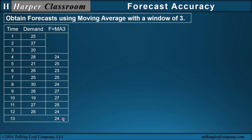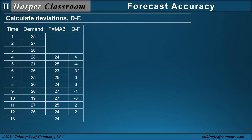Forecast accuracy addresses the question: how accurate or how good is that forecast? The approach is looking at past forecasts and how well they have forecasted past data. So how well that's performed in the past, we use that information to address the question. To do so, we take the deviations — the difference between our demand and our forecast. The closer those deviations are to zero, the closer our forecasts are to our demand.